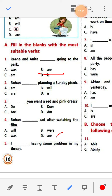Number two: Rohan dash planning a Sunday picnic. Rohan is one person only, so the answer is 'is'. Rohan is planning a Sunday picnic.